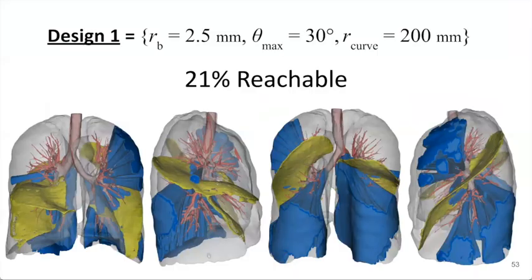With these same results, we can also visualize the specific regions in the lung anatomy that we're able to reach. We see that even with our most constrained device, we're able to reach 21% of the lung tissue, which is 11% more of the space compared to the 10% value we saw for the existing transoral approach.